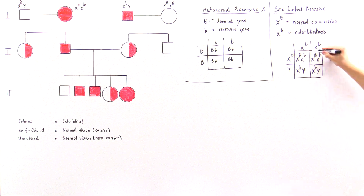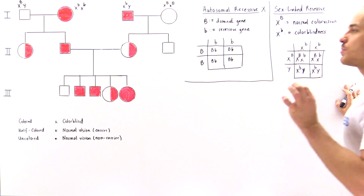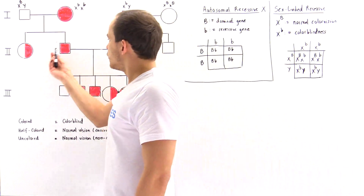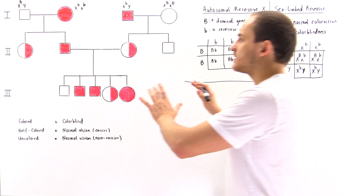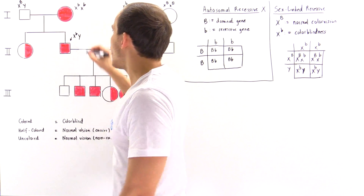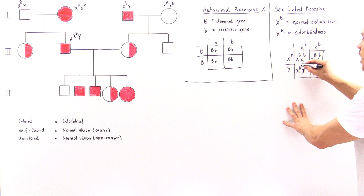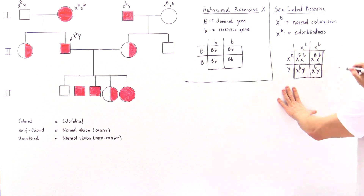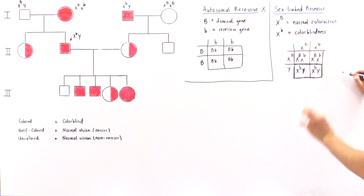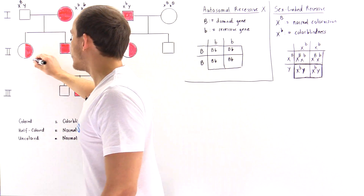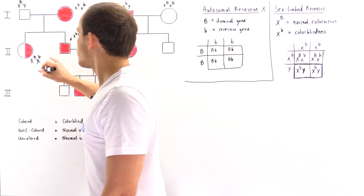The Punnett square gives us females X^B X^b and X^B X^b, and males X^b Y and X^b Y. So 100% of the males produced from this crossing will be fully colorblind, which is consistent with the colorblind male shown in the pedigree. And 100% of the females will be heterozygous carriers with normal phenotype — shown as half-colored — which is also consistent with the pedigree information.